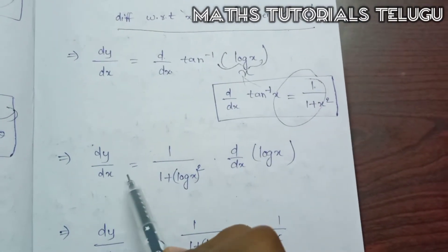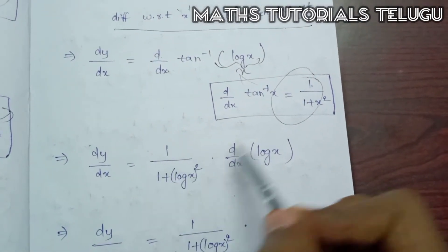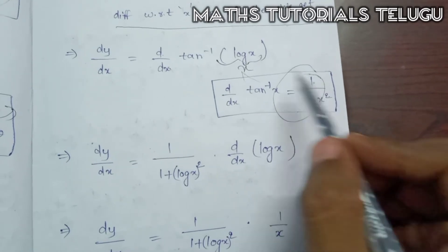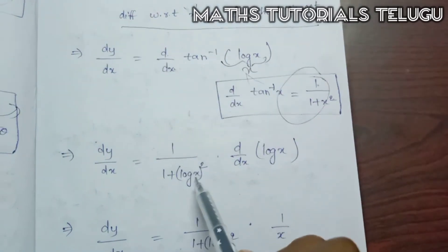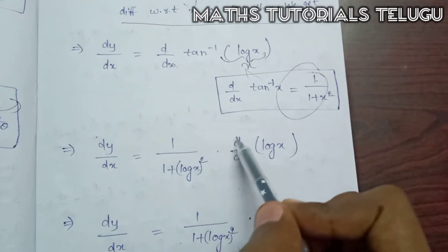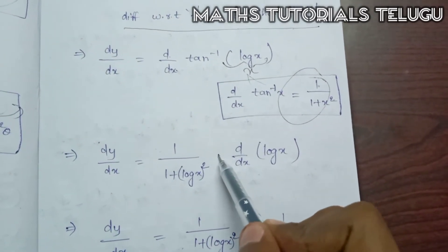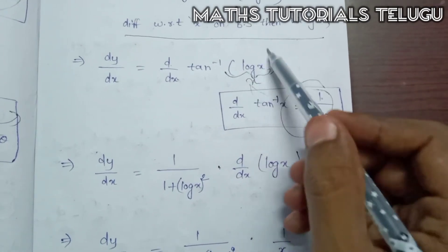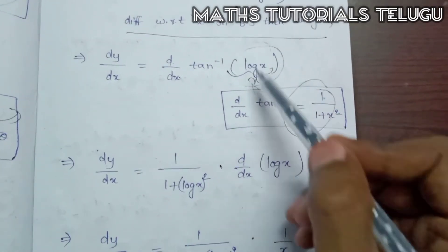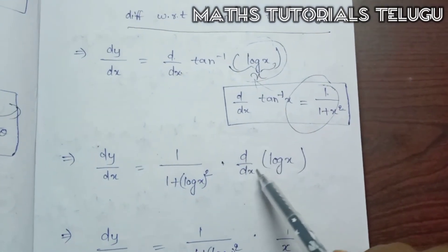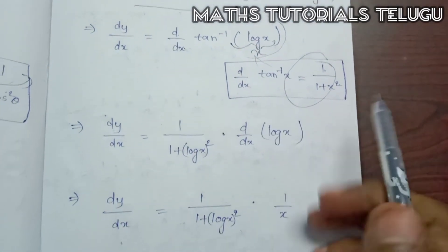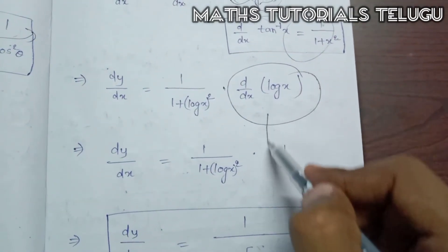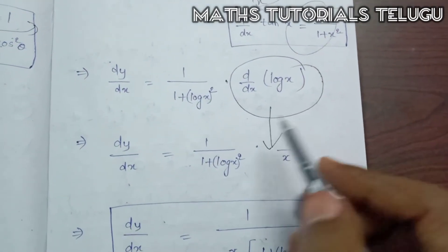So, dy by dx is equal to 1 divided by 1 plus (log x) squared, multiplied by the differentiation of log x. And d by dx of log x is equal to 1 by x.